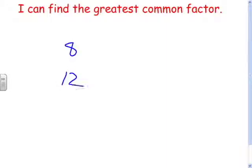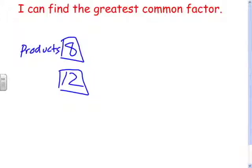8 and 12. So 8 and 12 here are the products, the answers. We want to know what numbers multiply together to get 8. First we'll do 8. So 1 times 8, so 1 and 8 are factors.